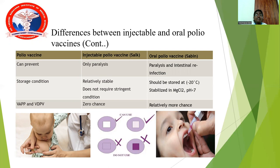The Salk (IPV) vaccine can only prevent paralysis, does not require stringent storage conditions, is thermostable, and has zero chance of vaccine-associated paralytic poliomyelitis or vaccine-derived infection. The Sabin (OPV) vaccine prevents both paralysis and intestinal reinfection. It must be stored at minus 20 degrees Celsius, stabilized with magnesium chloride, maintained at pH less than 7, but has a higher chance of complications.